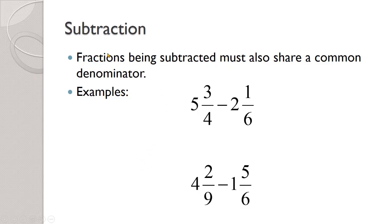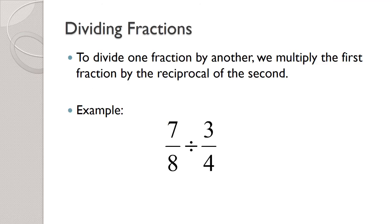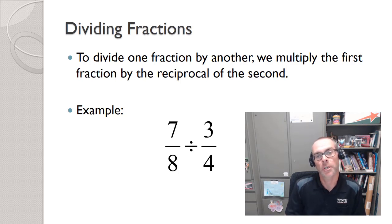That wraps up this unit. When adding and subtracting, we need a common denominator to make the pieces the same size. When multiplying, we don't need a common denominator, but we must convert mixed numbers to improper fractions first. When dividing, we multiply the first fraction by the reciprocal of the second. You now know how to add, subtract, multiply, and divide fractions — everything needed for this course. Go ahead and do the practice problems, and reach out by text or email if you have questions. We'll see you in the next lesson.